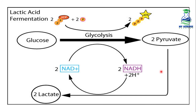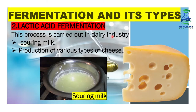So, alcoholic fermentation takes place in the presence of yeast, while lactic acid fermentation takes place in the presence of bacteria like Streptococcus or lactic acid bacteria. This process is carried out in the dairy industry, such as in soy milk and production of various types of cheese. Various types of cheese are produced by using various types of bacteria by fermenting the milk.